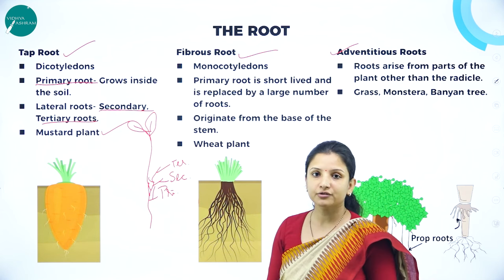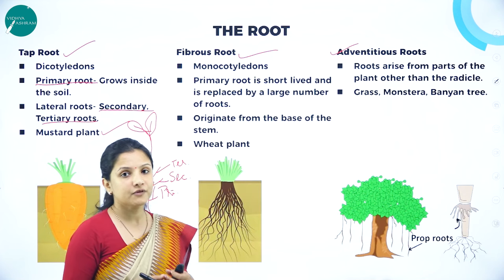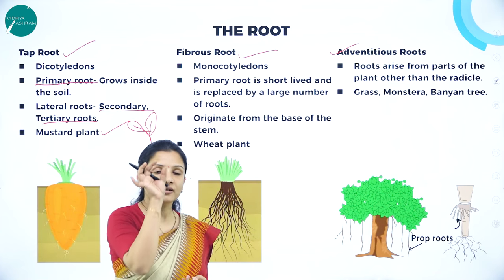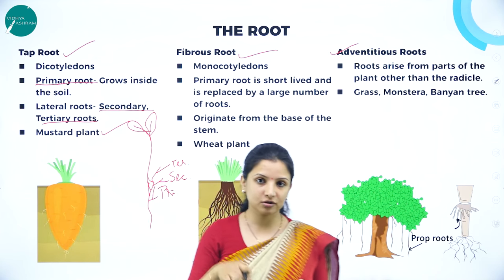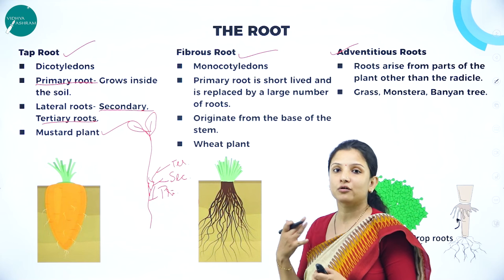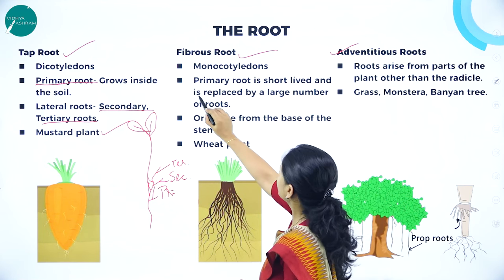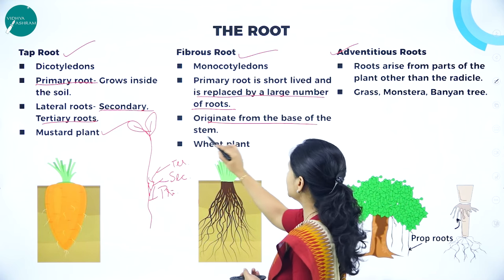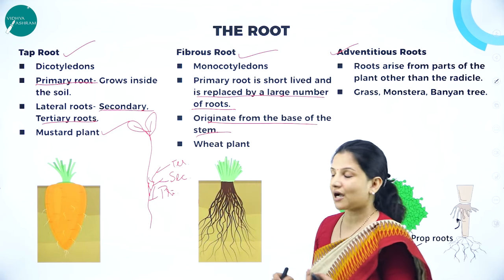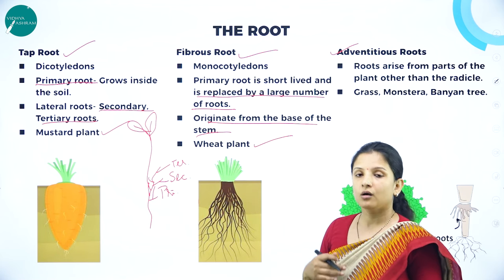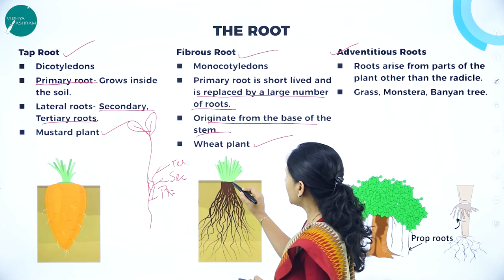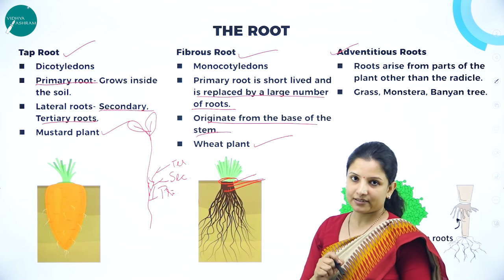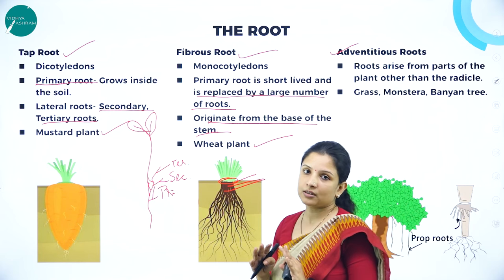Next is fibrous root. Fibrous roots are usually found in monocotyledonous plants. A main characteristic of fibrous roots is that the primary root is temporary — after a certain period of time it vanishes and is replaced by a large number of roots that originate directly from the base of the stem. For example, wheat plant and all the grasses have fibrous roots. These small, tiny roots arise directly from the base of the stem, and the primary root is completely short-lived.